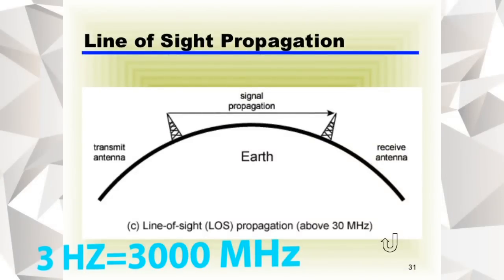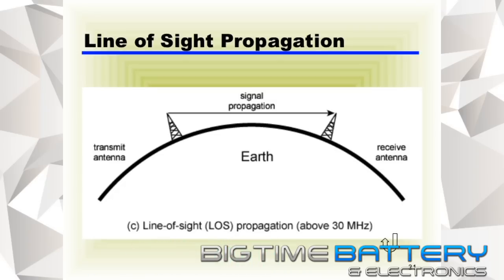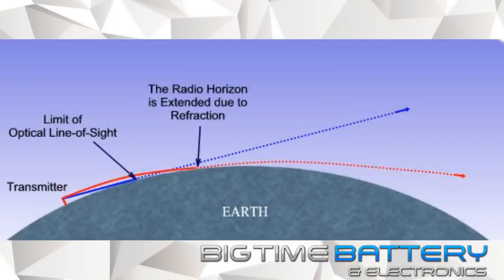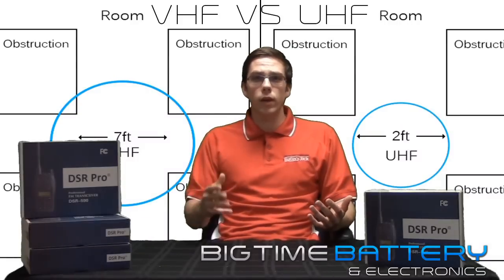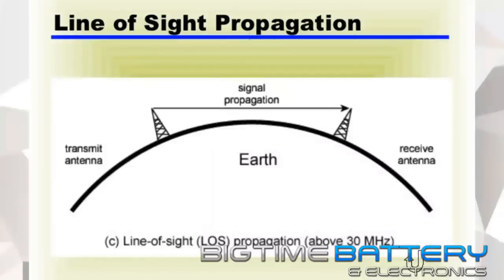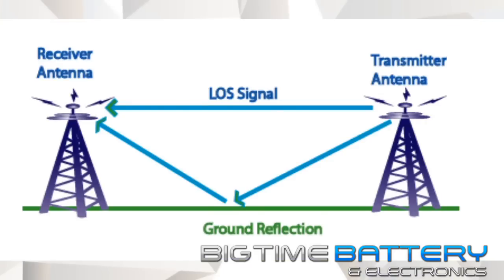Radio waves in the UHF band travel almost entirely by line of sight propagation and ground reflection. Line of sight propagation is a characteristic of electromagnetic radiation which means waves travel in a direct path from the source to the receiver, as shown by the picture displayed. Ground reflection is a radio propagation model that predicts path loss when the signal received consists of the line of sight component and multiple path components formed by predominantly a single ground reflected wave.